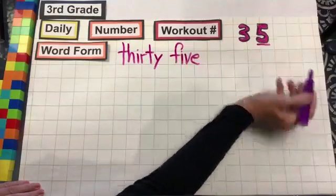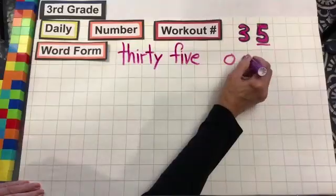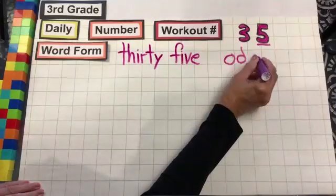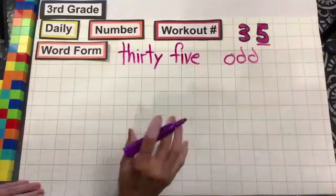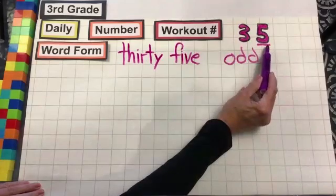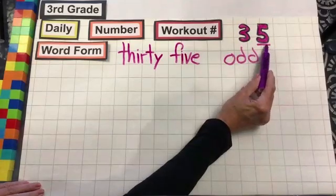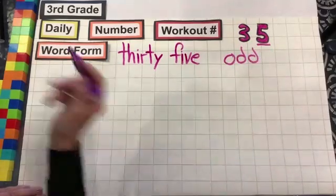And because we have a 5 in the ones place value, it is an odd number. So any number that has a 1, 3, 5, 7, or 9 in this place value is odd.